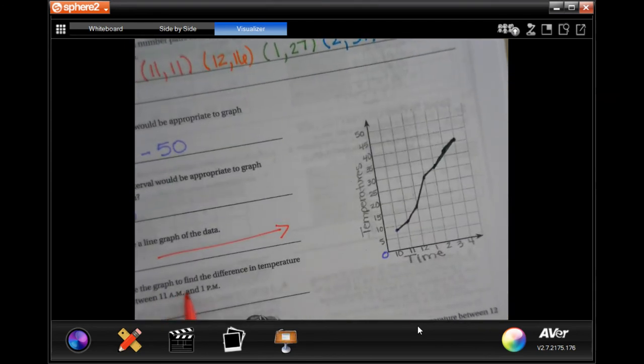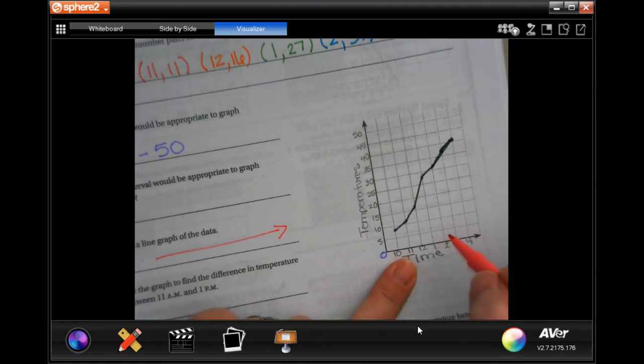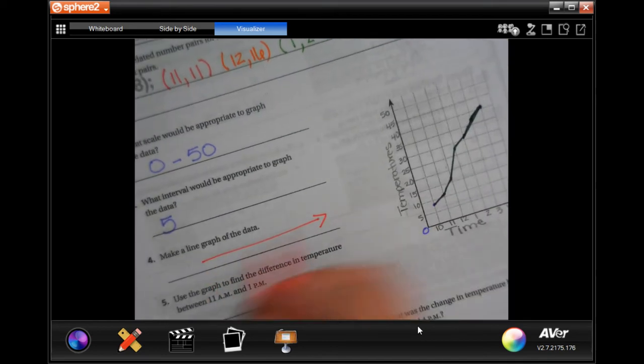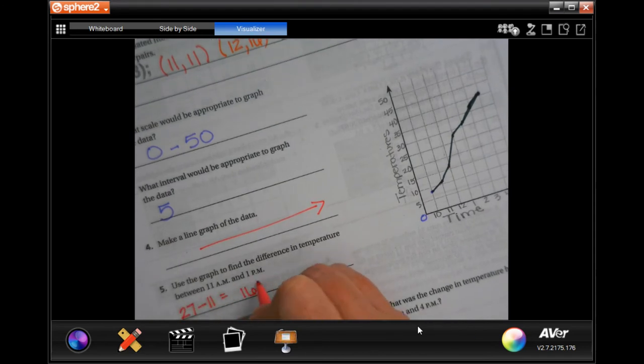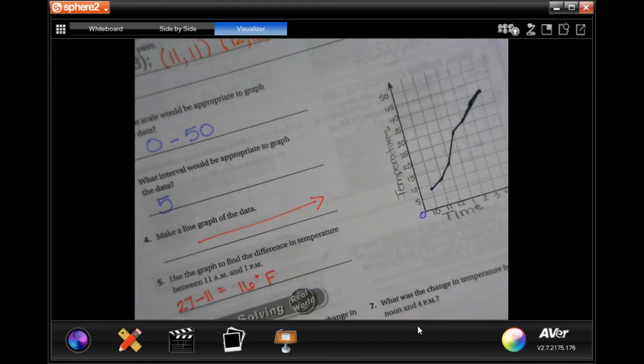Use the graph to find the difference in temperature between 11 a.m. and 1 p.m. So at 11 a.m. it was 11 degrees, and at 1 p.m. it was 27 degrees. So 27 minus 11, and you're going to get 16 degrees Fahrenheit.